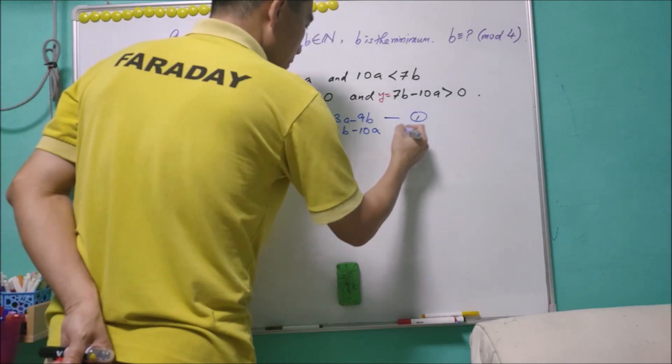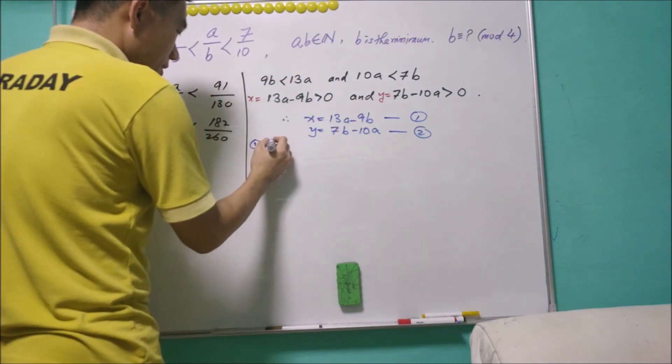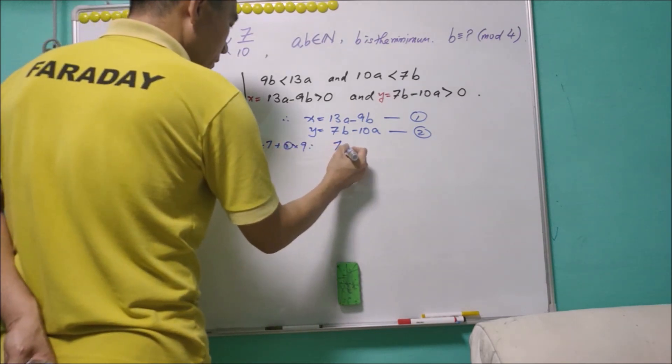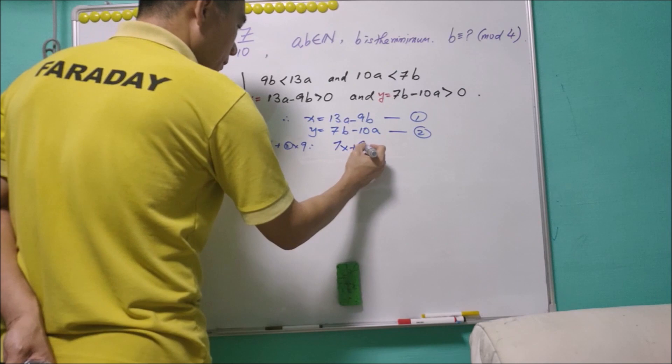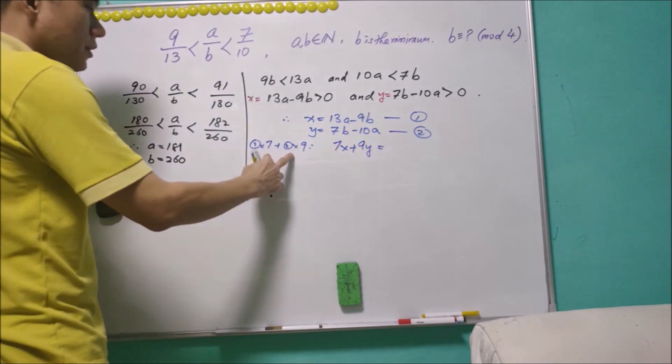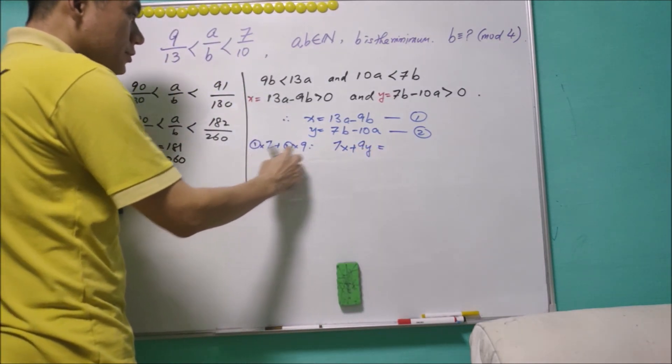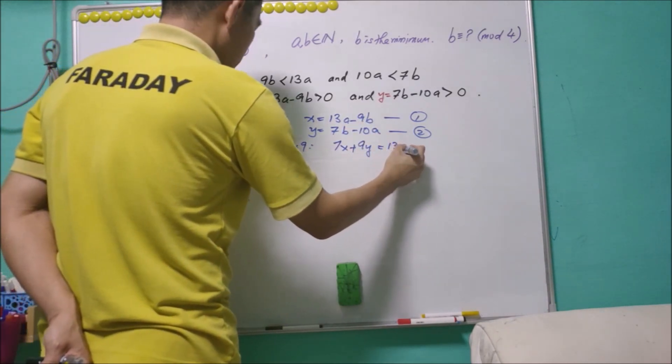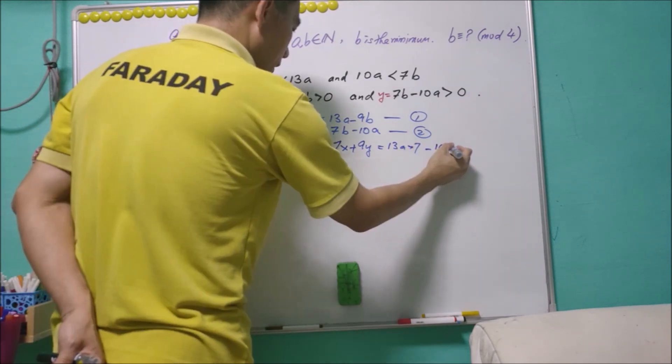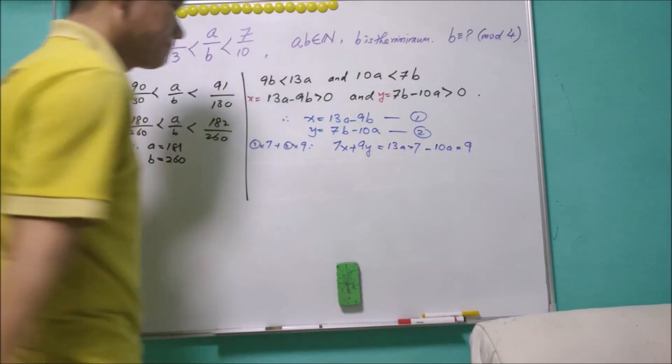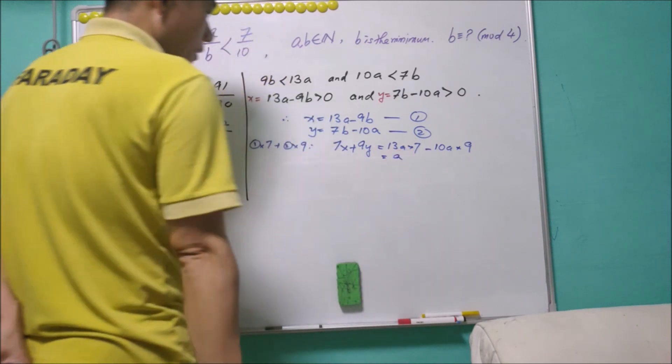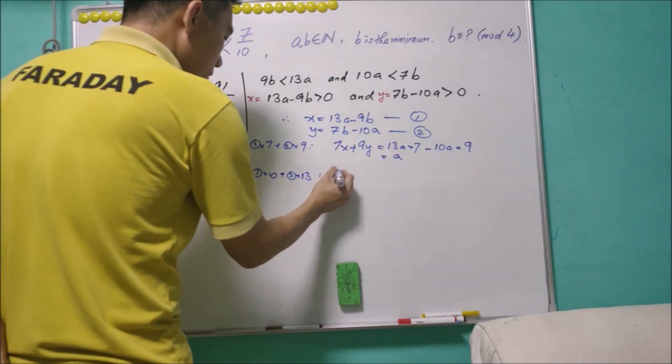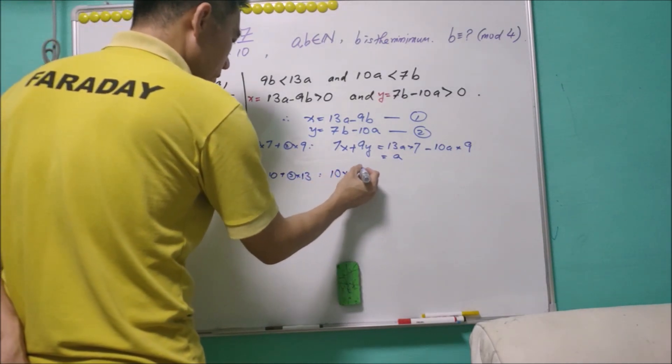So this is equation 1, equation 2. Equation 1 times 7 plus equation 2 times 9, so 7x + 9y equals 13a times 7 minus 10a times 9. The reason for doing this is to eliminate b. This will give me a equals 7x + 9y.